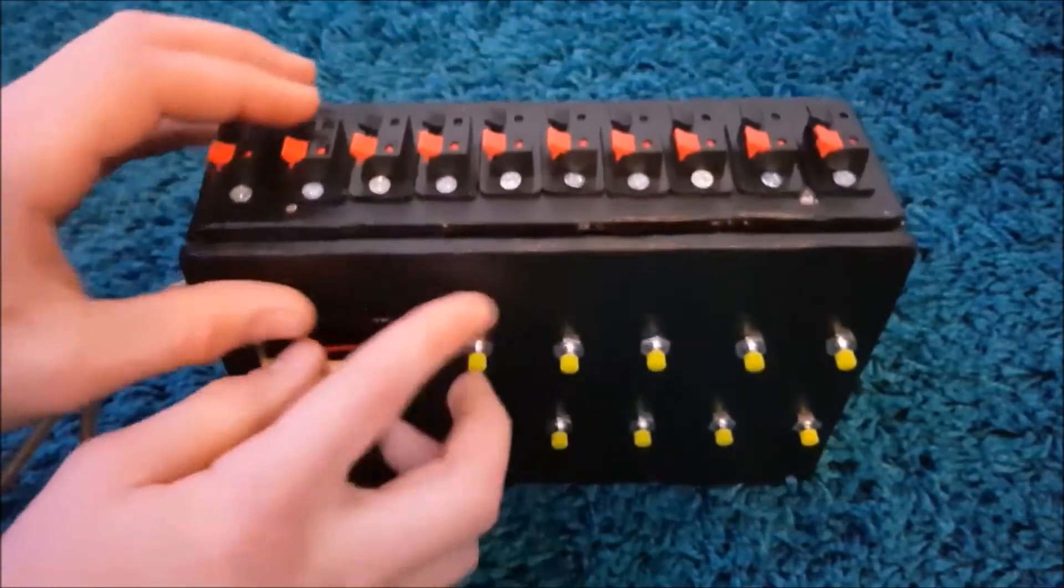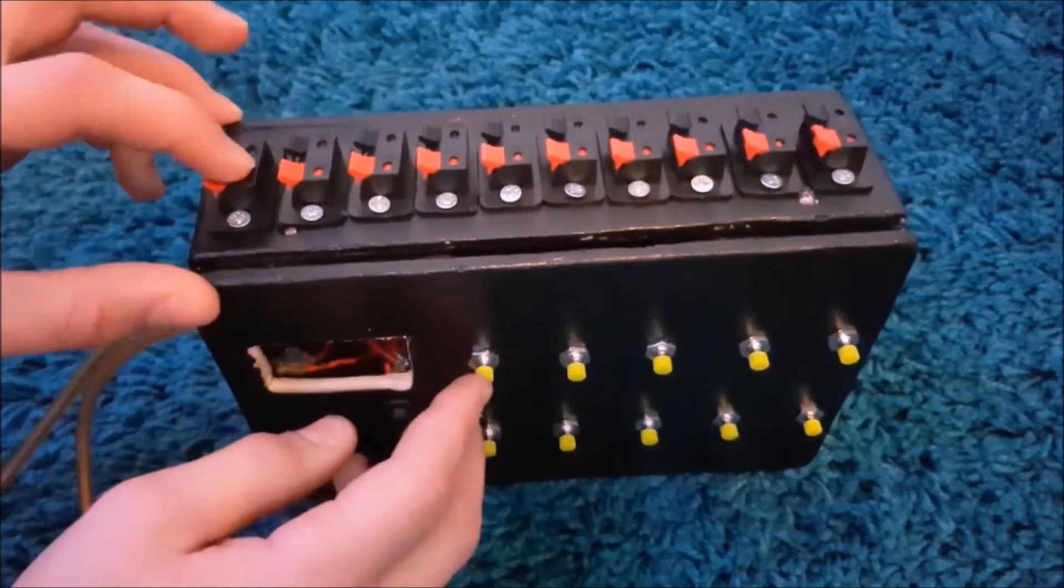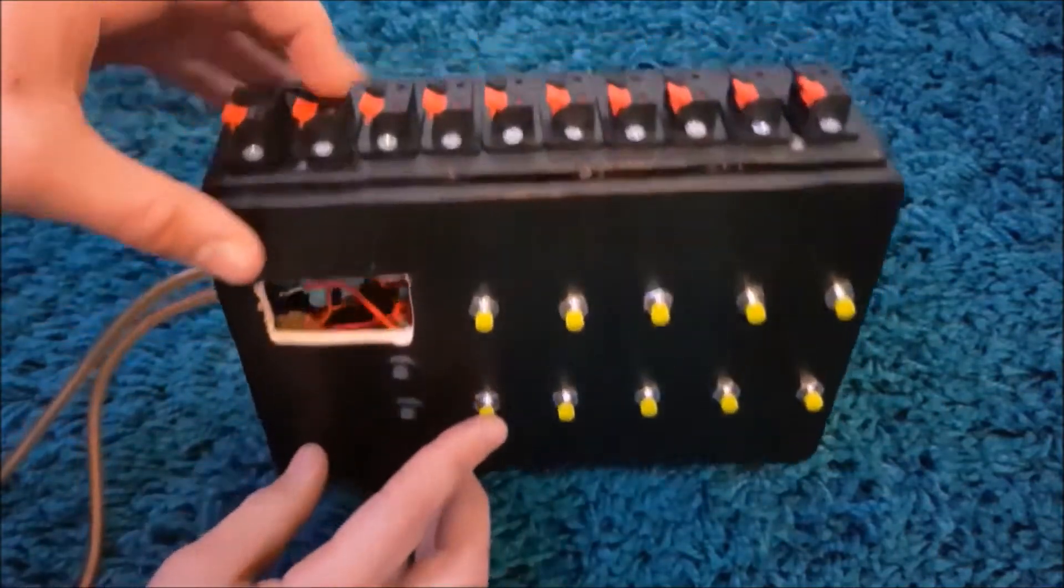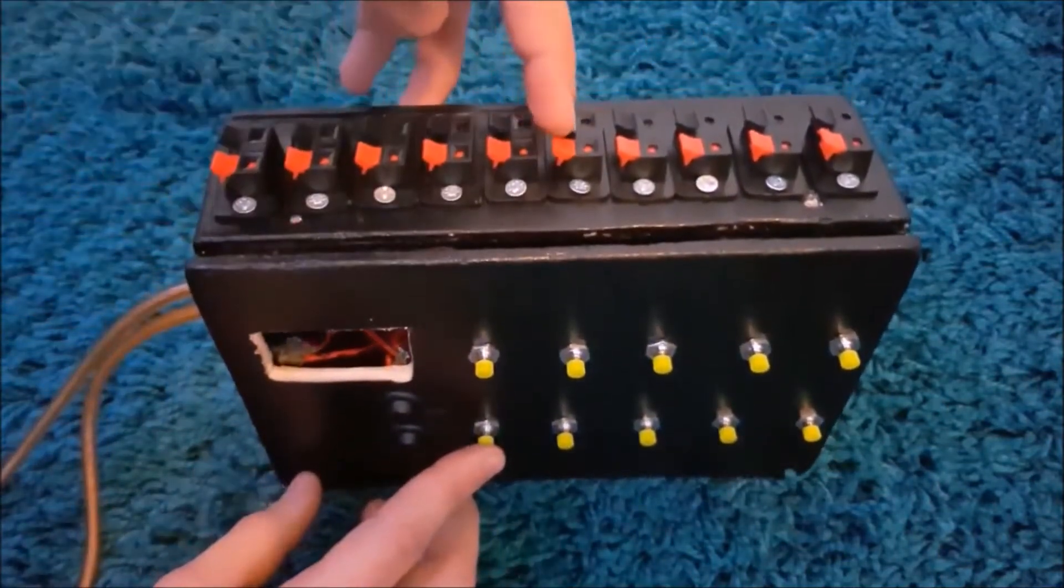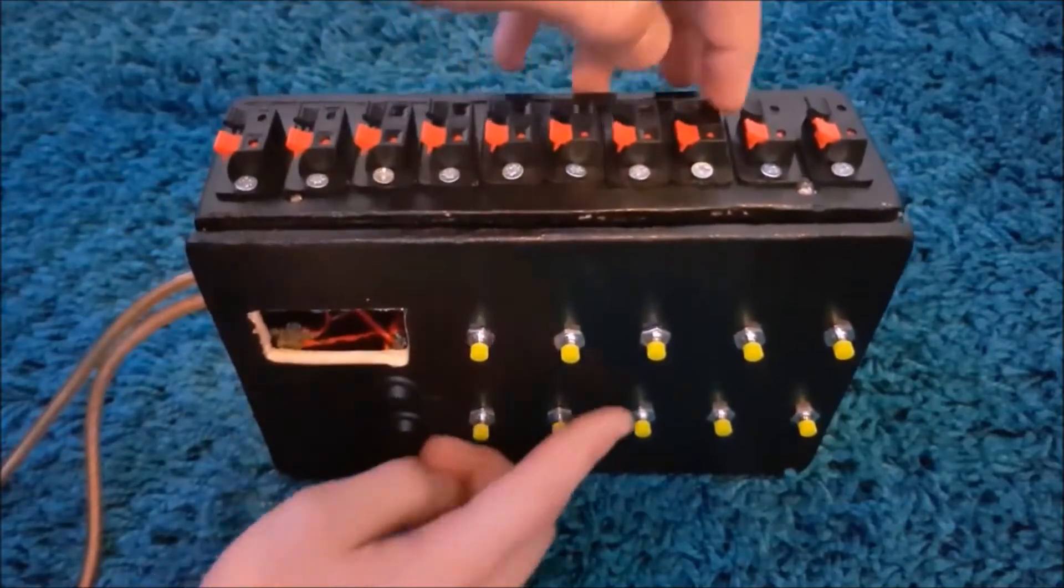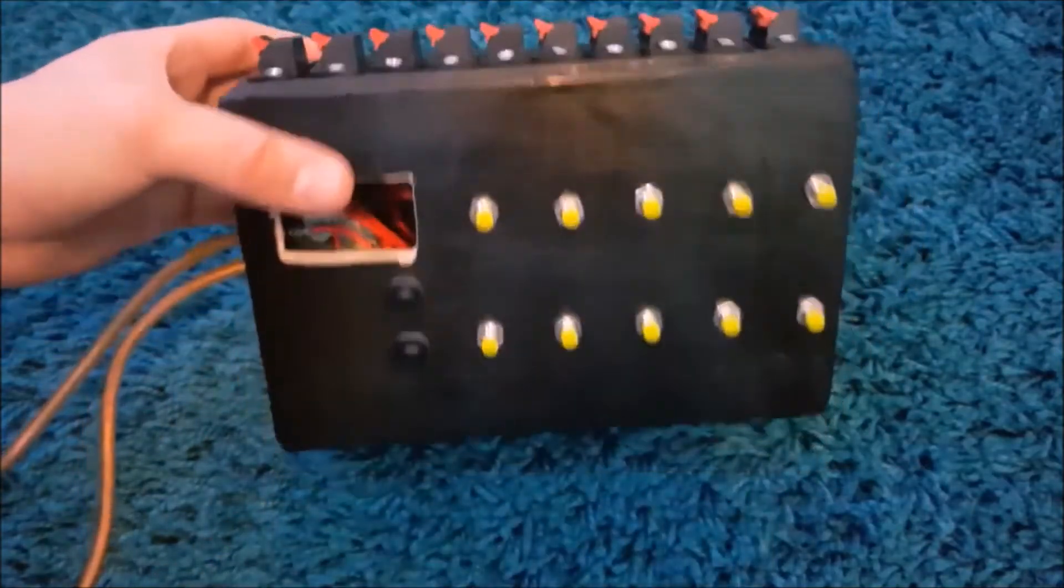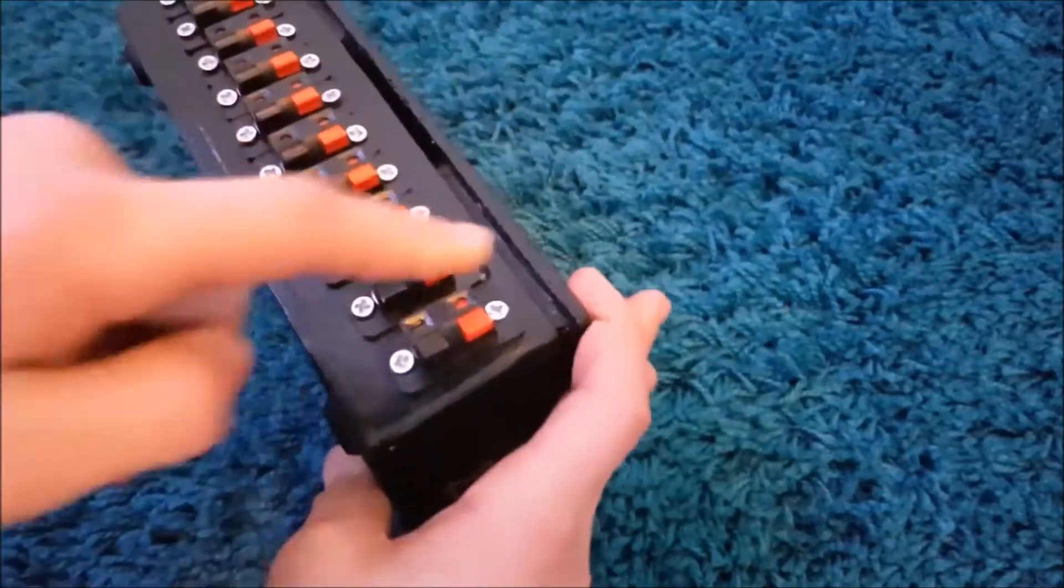That one will be number one, one there will be number two. Then for the next row it starts somewhere around there. They're all gonna be numbered like one to ten on the numbers and the switches.